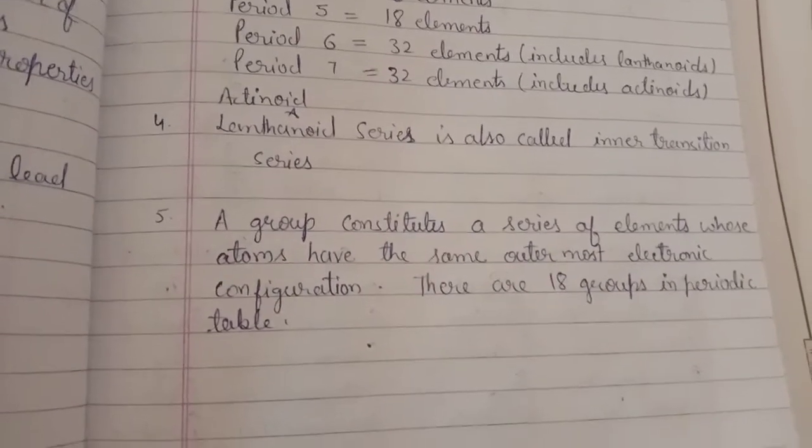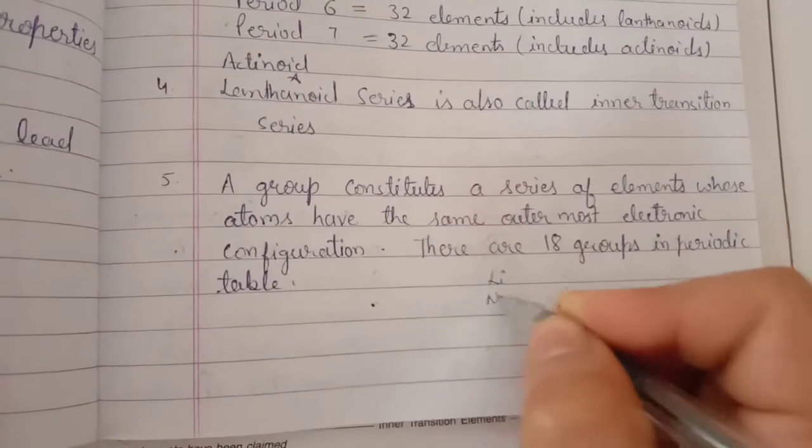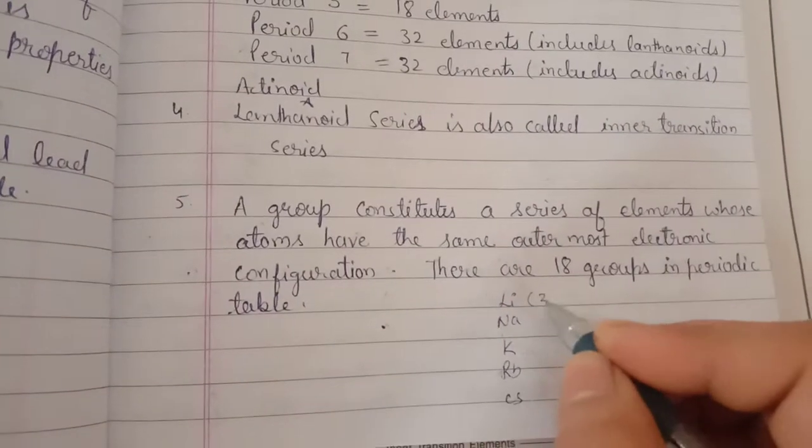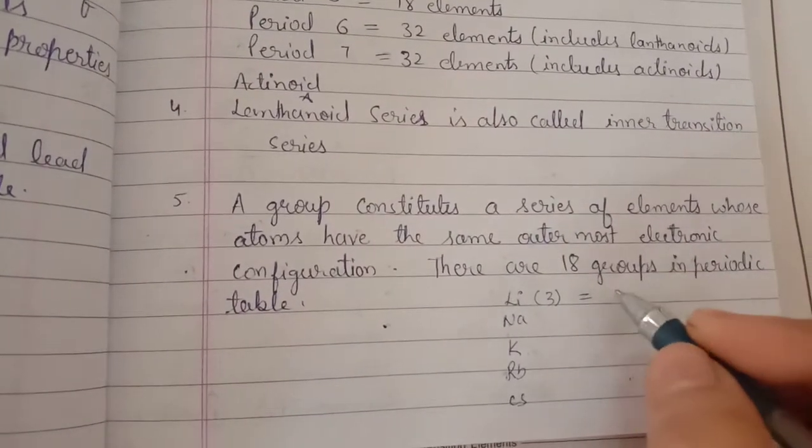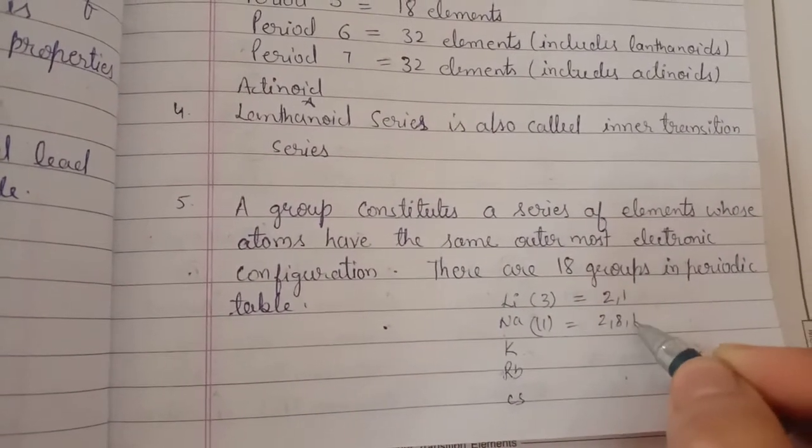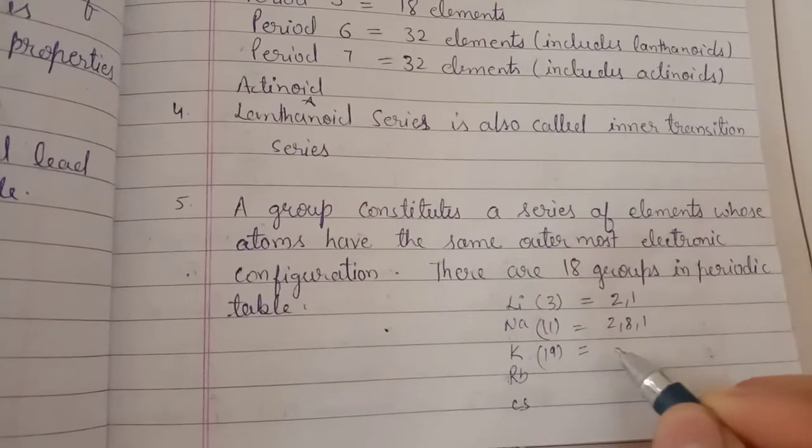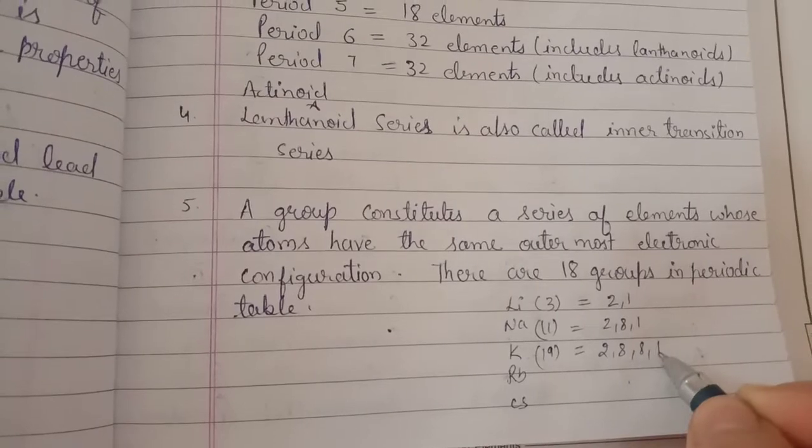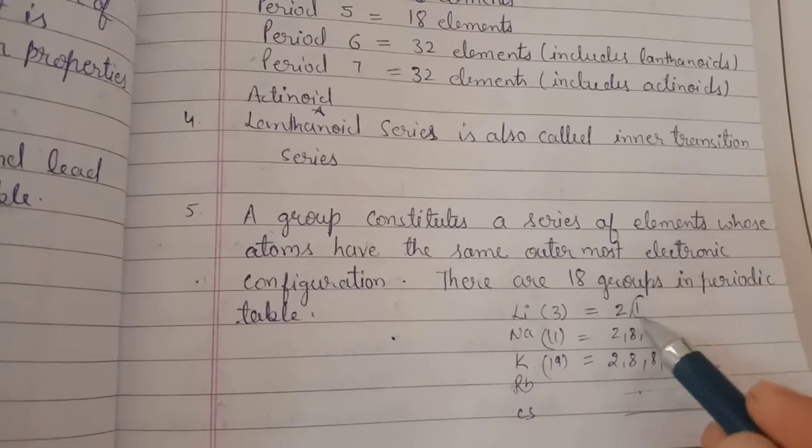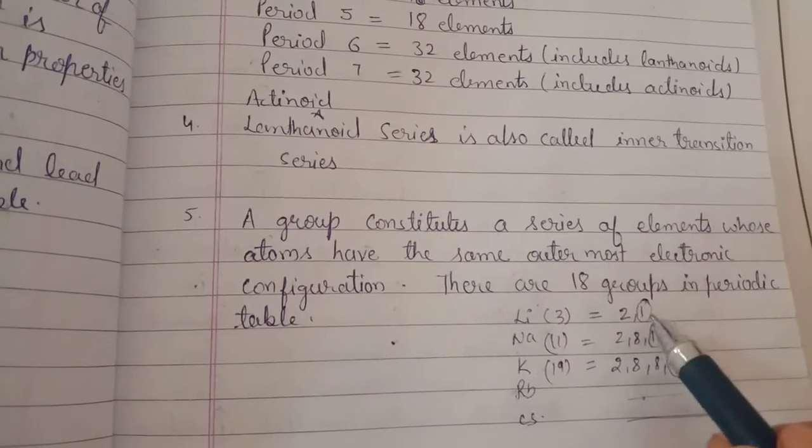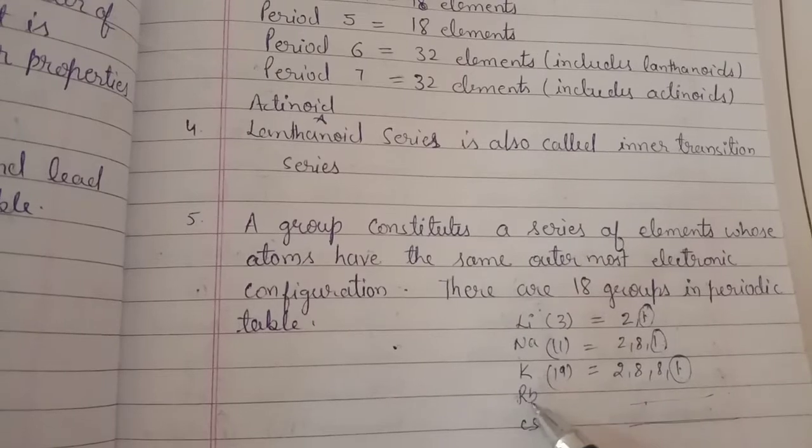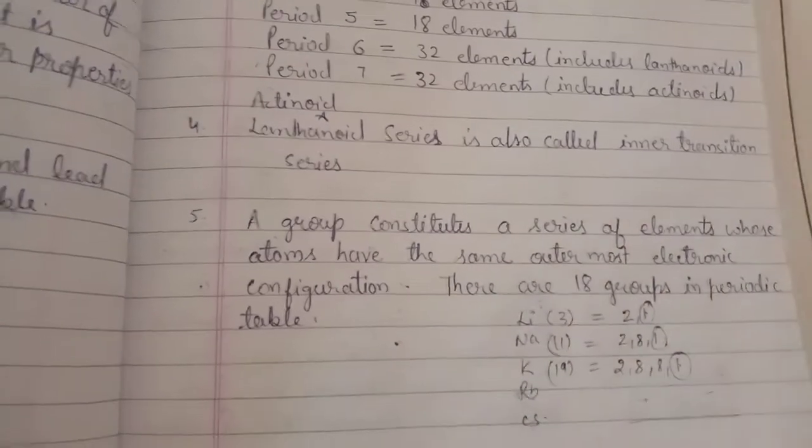A group constitutes a series of elements whose atoms have the same outermost electronic configuration. There are 18 groups in the periodic table. In each group, elements are placed together whose outermost configuration is the same. For example, lithium, sodium, potassium, rubidium, and cesium. Lithium's atomic number is 3, so according to Bohr's model, its configuration is 2,1. Sodium's atomic number is 11, so it's 2,8,1. Potassium's atomic number is 19, so it's 2,8,8,1. Similarly, their configurations continue forward, but in the outermost shell of all these elements, there is one electron in common. That's why lithium, sodium, potassium, rubidium, and cesium are placed in a common group.